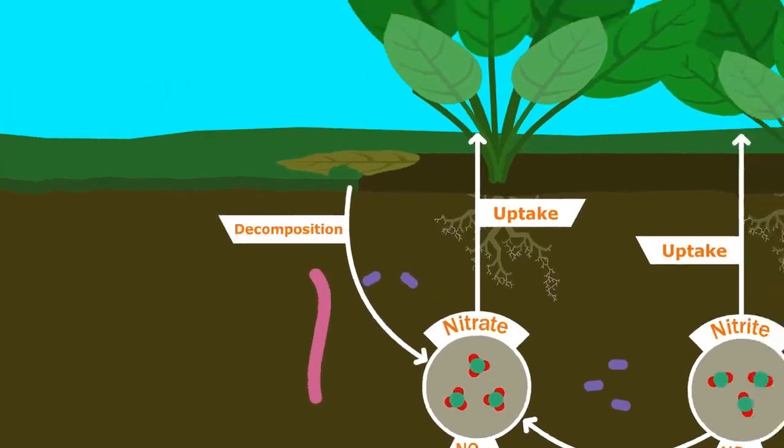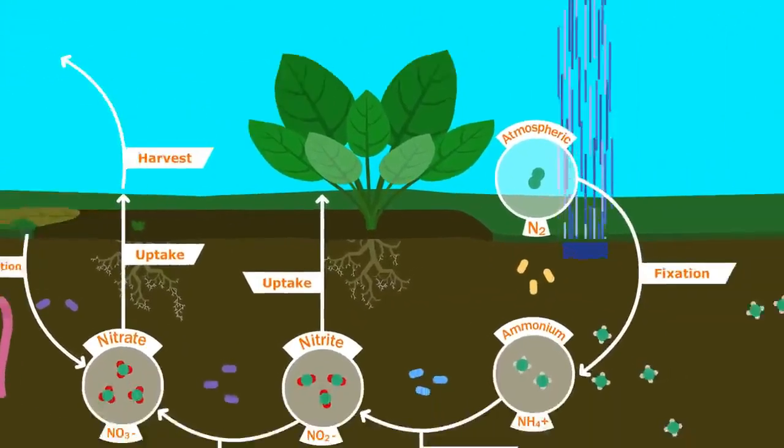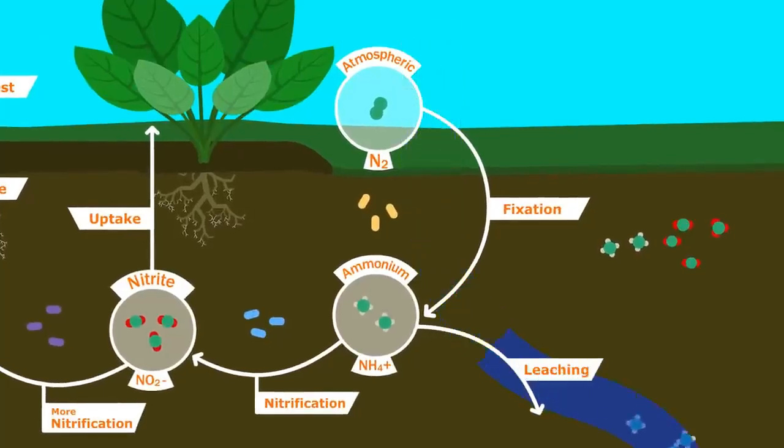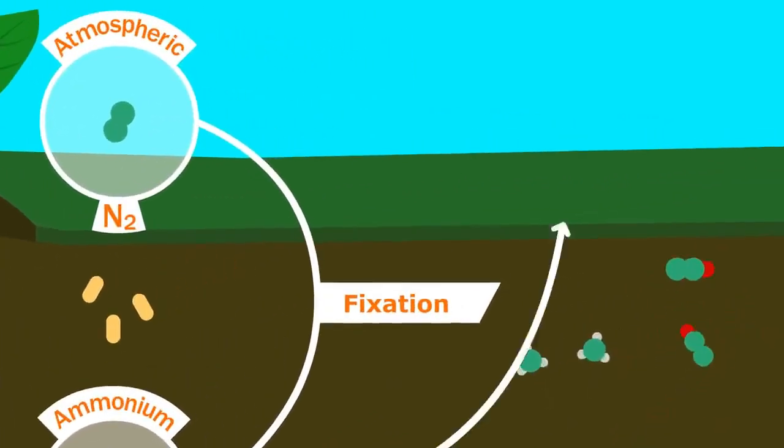Some of the ways nitrogen exits the soil is when the crop is harvested, when water carries it away, or when it becomes gaseous and returns to the atmosphere.